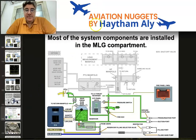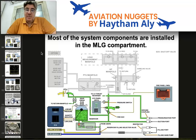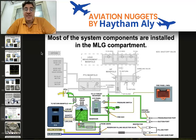The Airbus A320 has three independent hydraulic systems with no transfer of fluid between them. The three systems are called green, blue, and yellow. Most green components are located in the main landing gear bay, most blue components are in the blue hydraulic bay on the left-hand side forward of the main landing gear bay, and most yellow system components are in the yellow hydraulic bay.